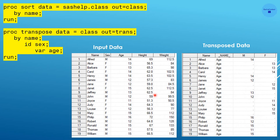Here is an example: first we sort the data set by the variable Name. Then: PROC TRANSPOSE DATA=sorted_data OUT=trans; BY Name; ID Sex; VAR Age; RUN. In the output, the data is grouped by Name, the transposed variable labels come from the Sex values (Male or Female), and the values under Male and Female come from the VAR variable Age. The _NAME_ variable contains the name of the transposed variable.